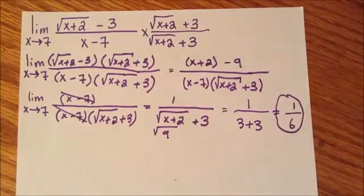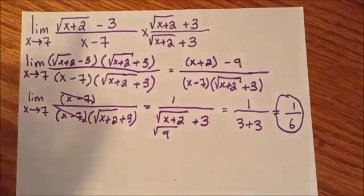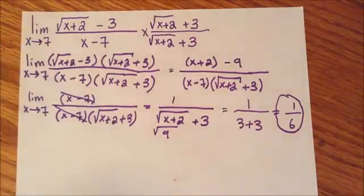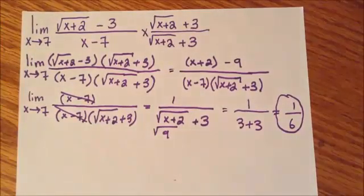Now we can plug in x equals 7: we get 7 plus 2 equals 9, square root of 9 is 3, so we have 1 over (3 plus 3), which gives us 1 over 6 as our final answer. Make sure whenever you have a square root in your limit, you multiply by its conjugate.